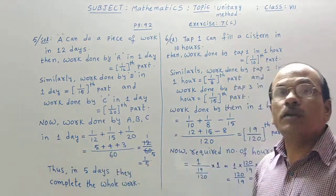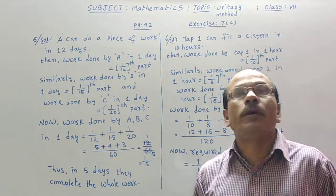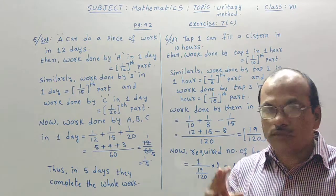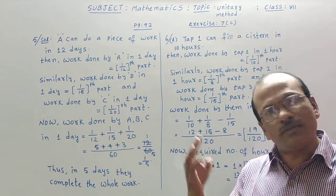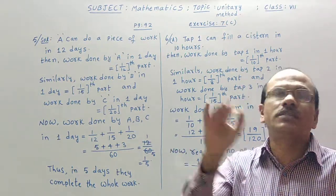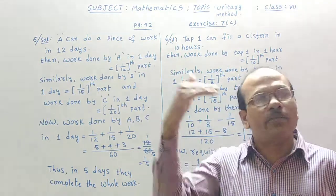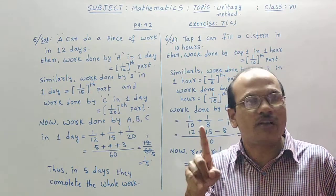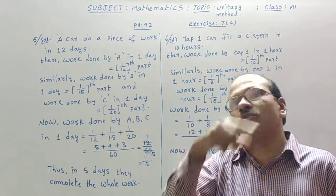In one day, 1 by 5 part. That means 1 by 1 fifth part. 2 days, 2 by 5. 3 days, 3 by 5. 4 days, 4 by 5. 5 days, 5 by 5. Cancelation gives you 1 by 1 gives you 1. The whole work. One work means whole work.